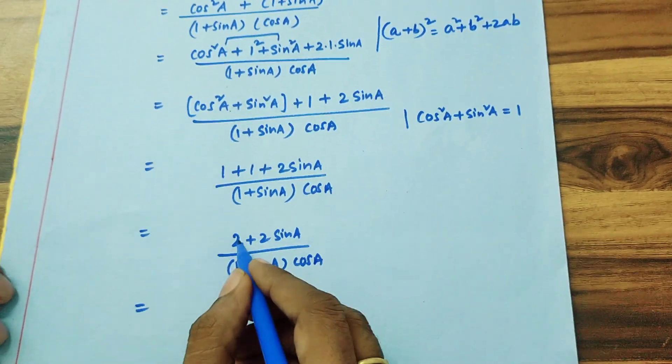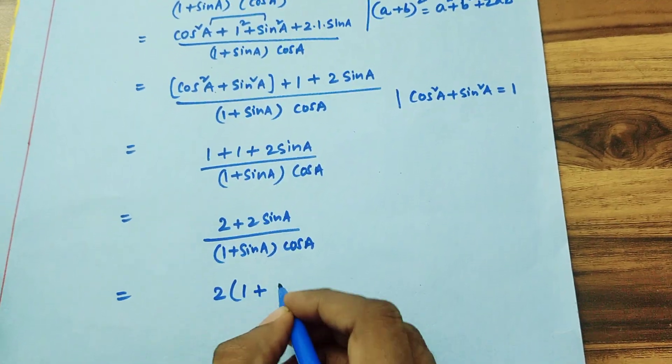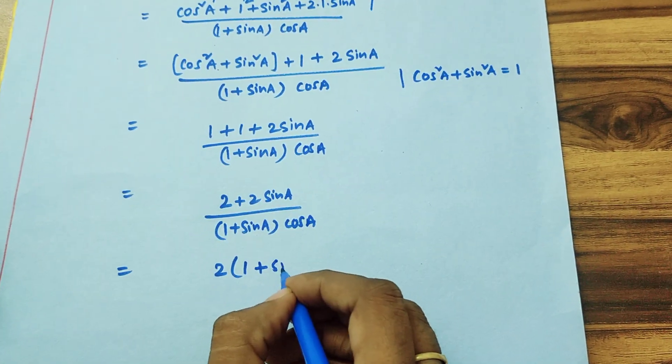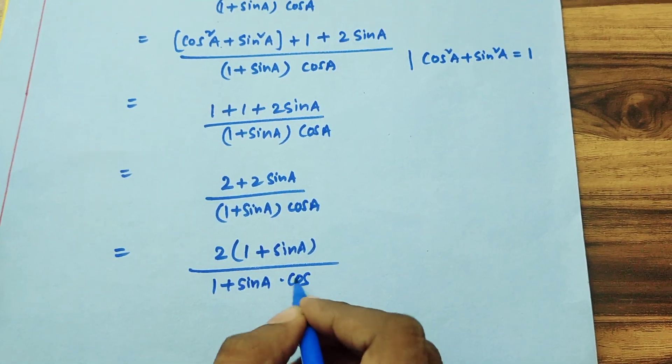2 is common in both the terms, so 2 into 1 plus sin A, that is 2 into 1 plus sin A by 1 plus sin A into cos A.